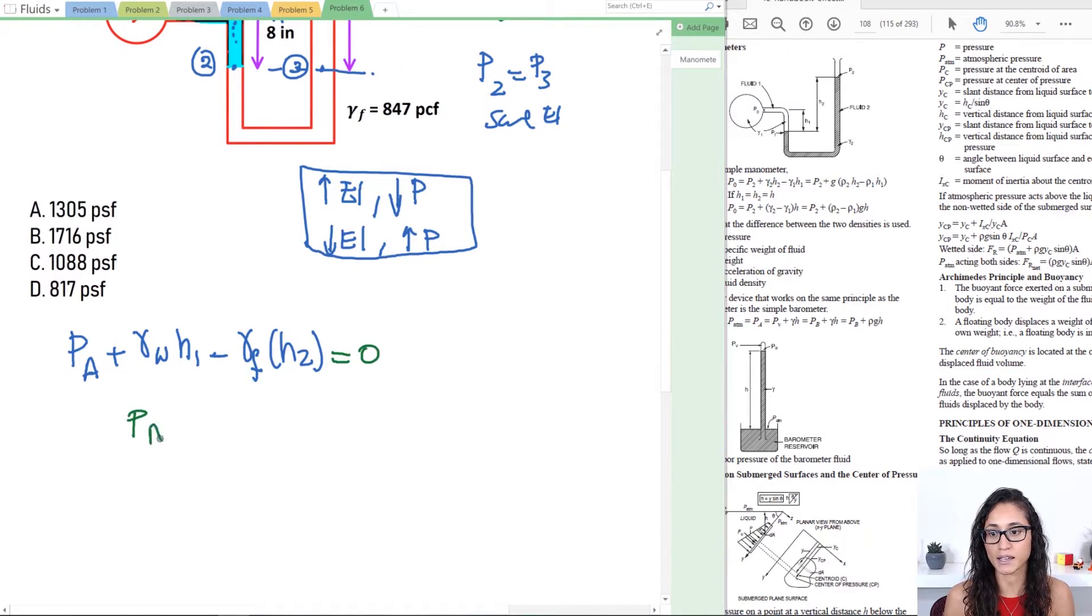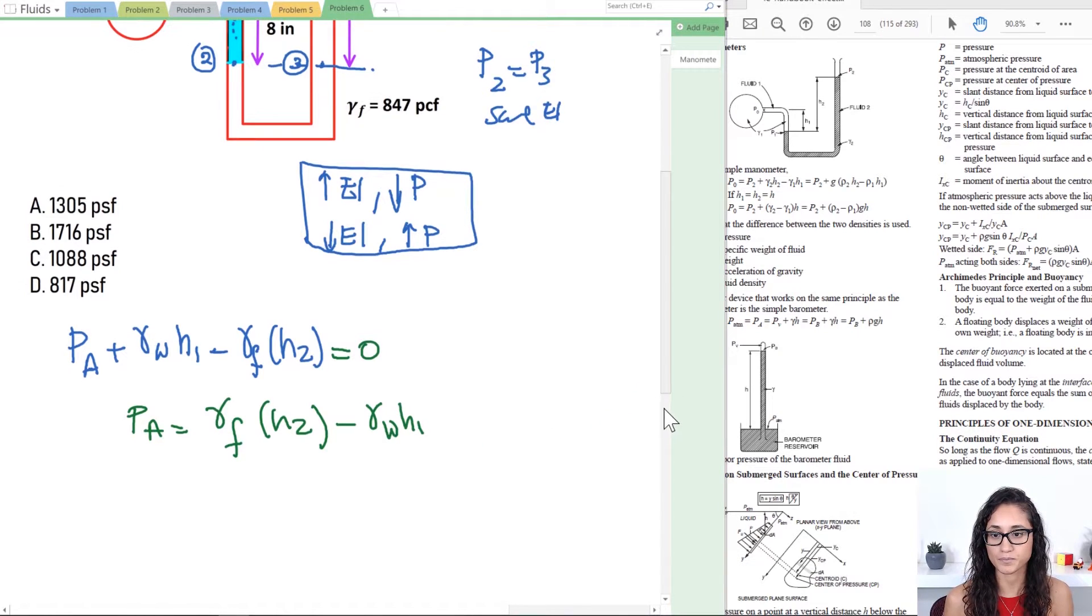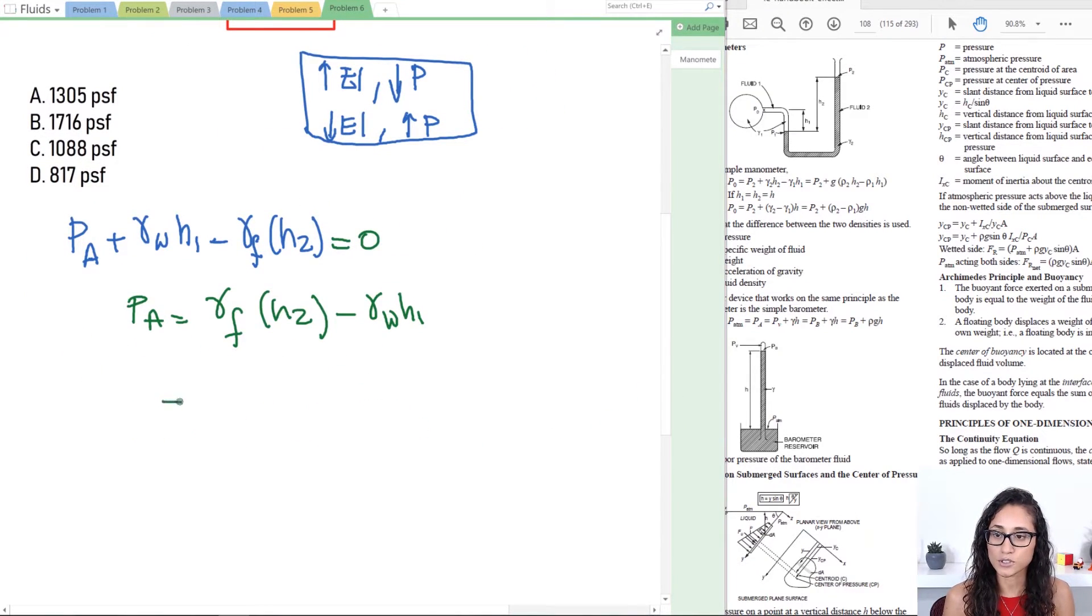Now let's solve for P_A. So I have P_A is equal to the unit weight of the fluid times the height minus the unit weight of the water times h1. Now the unit weight of the fluid was 847 pounds per cubic feet.